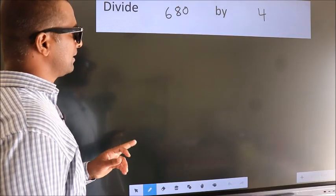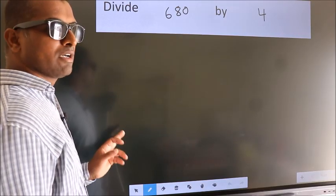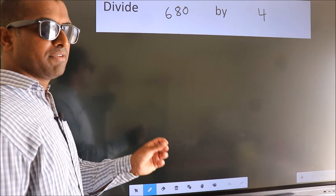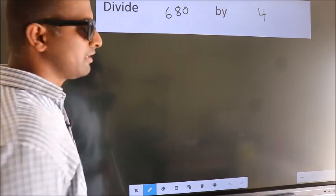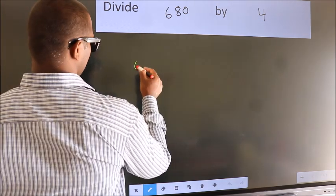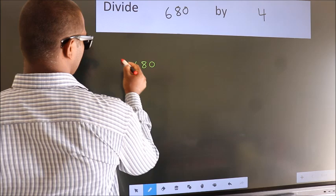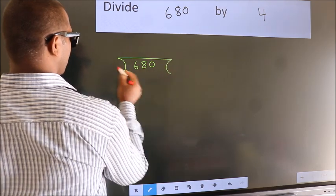Divide 680 by 4. To do this division, we should frame it in this way. 680 here, 4 here.